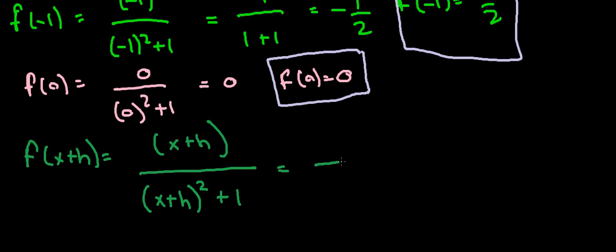So we get, let's do the bottom first. So we know how long to make this line here. So we'll foil this out. We'll get x squared plus 2xh plus h squared plus 1. And then on the top, we just have x plus h.